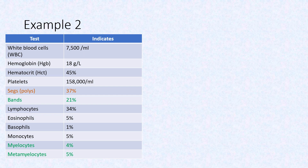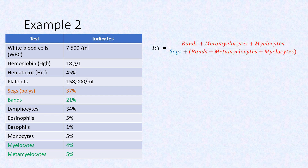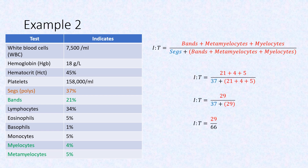Calculate the IT ratio for example 2. Recall the formula: immature neutrophils divided by the total number of neutrophils. From the CBC, we need the SEGS and the immature neutrophils — bands, myelocytes, and metamyelocytes. The total percentage of immature neutrophils is 29 and the total number of neutrophils is 66. Dividing these gives an IT ratio of 0.43.